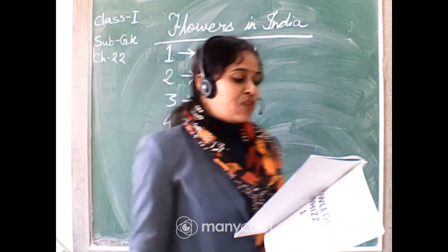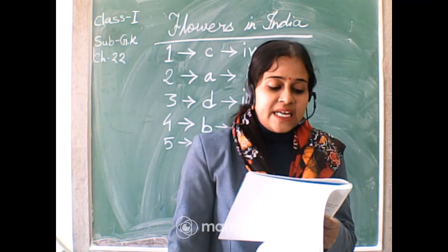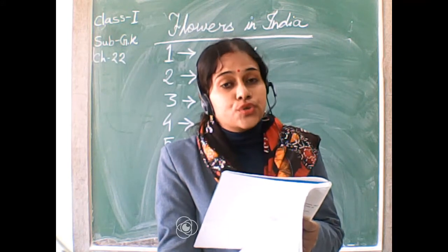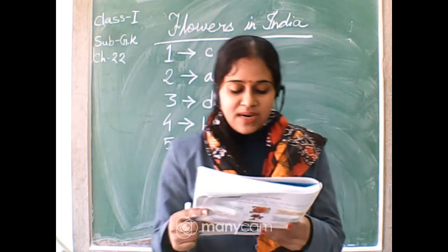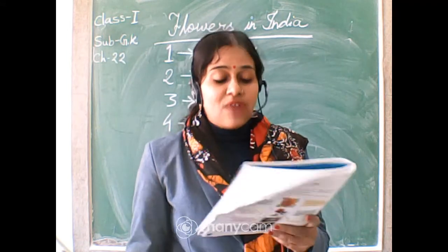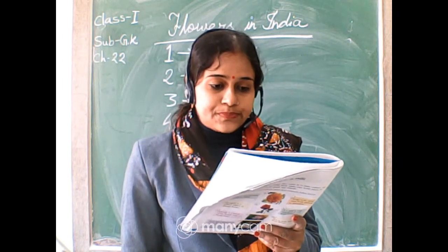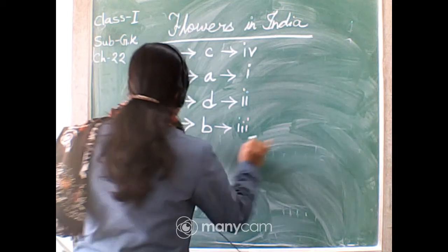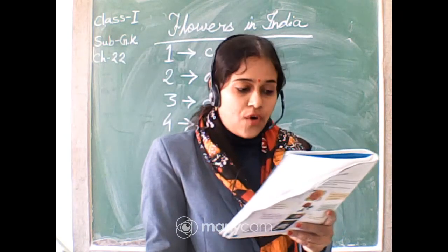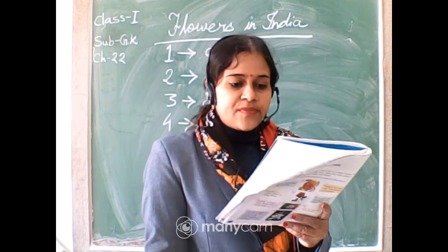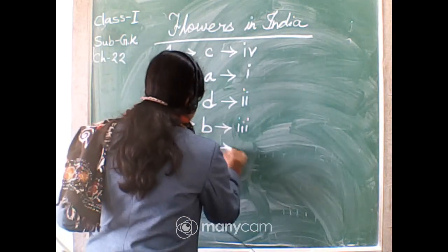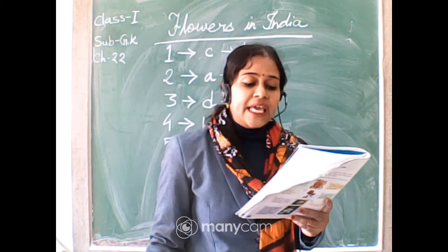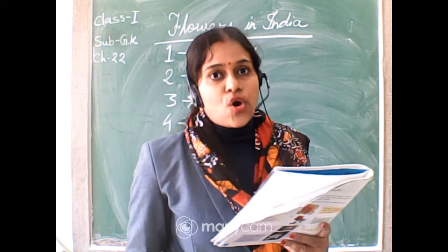Number five: Flame of the Forest. The flowers are bright red and orange and they bloom from April to June. Number five joins picture G. The ground beneath a Flame of the Forest tree in spring is covered in a bright red carpet of flowers.